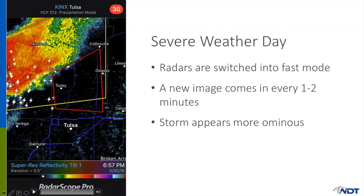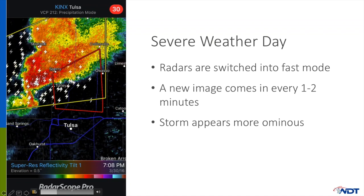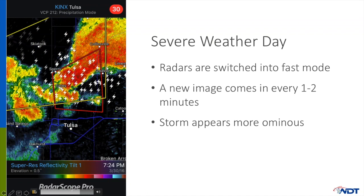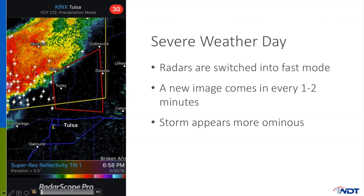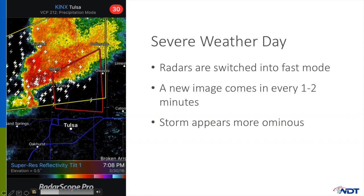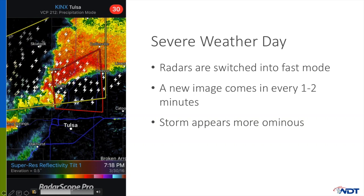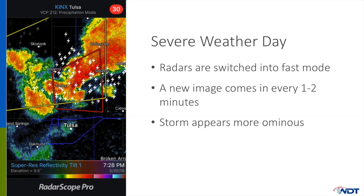Now let's watch a loop of a severe storm that produced a tornado. Look at the clock — on a severe weather day, the radars spin faster and gather data images every one to two minutes. This loop is about 30 minutes long, and because of that, the storm appears more ominous. It's always a good idea to check how fast images are coming in, as it can make a big difference in when that storm gets to you.